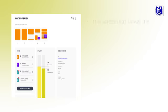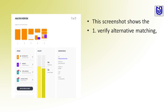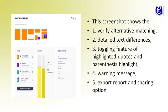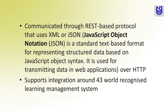A screenshot shows features including: verify alternative matching, detailed text differences, toggling features of highlighted quotes and parenthesis highlight, warning messages, export report and sharing options. Urkund communicates via REST-based protocol dependent on XML or JSON, a standard text-based format for representing structured data using JavaScript object syntax. It is used for transmitting data in web applications over HTTP and supports integration with around 43 world-recognized learning management systems.